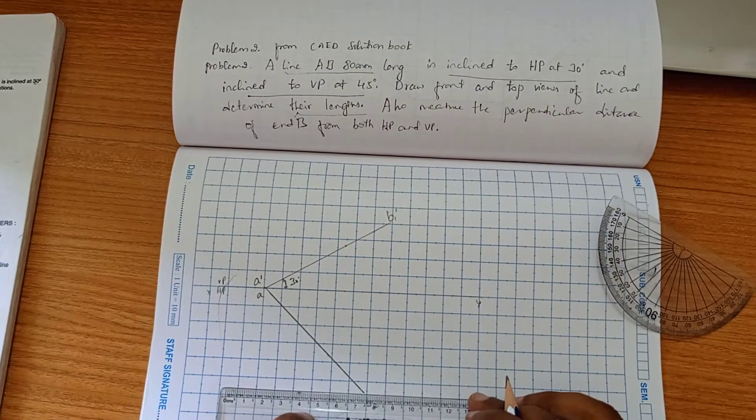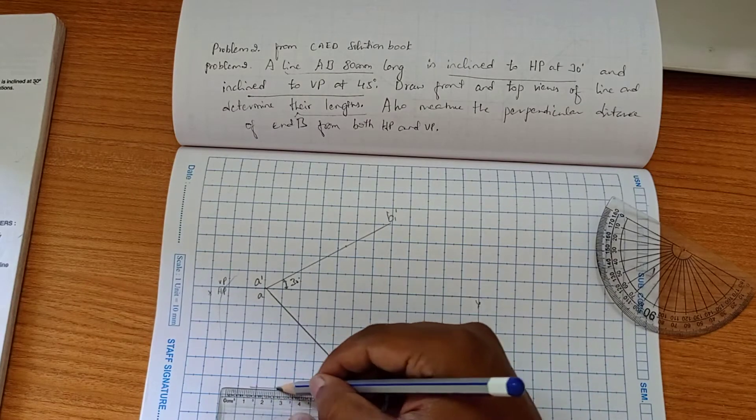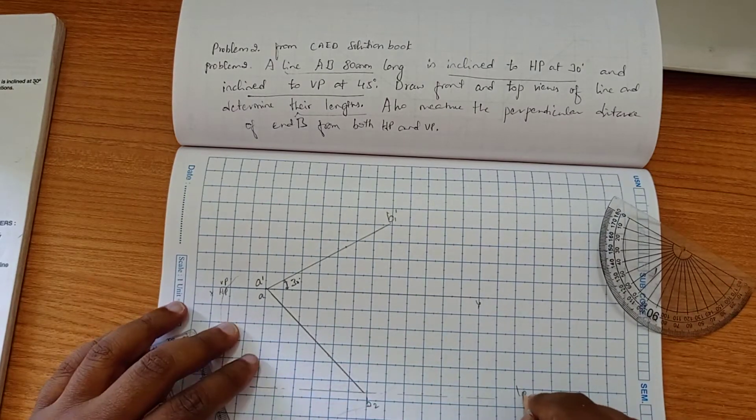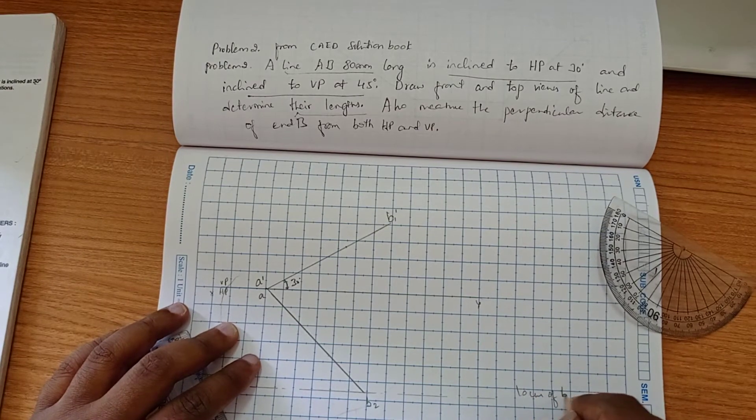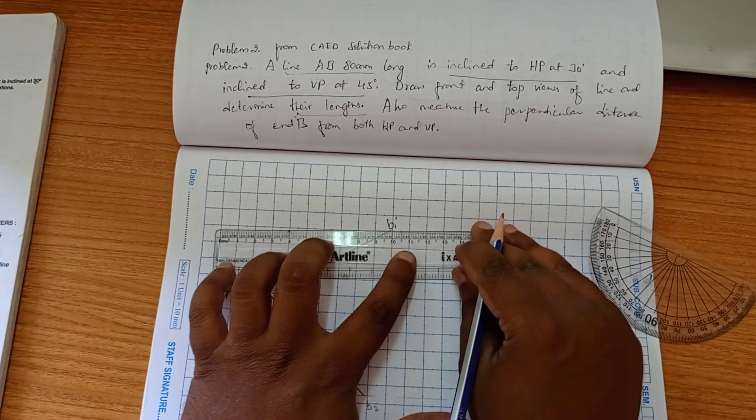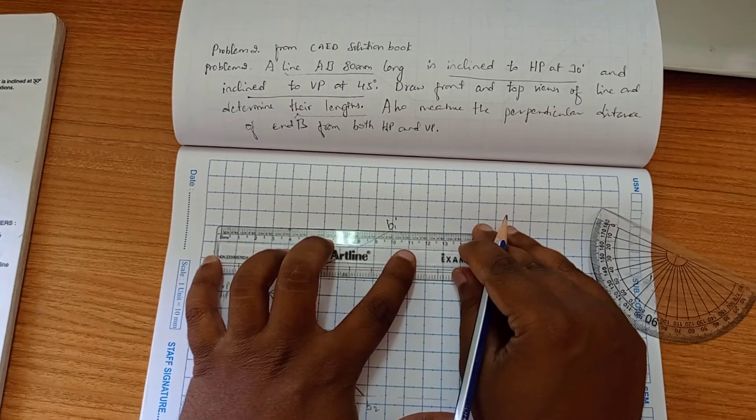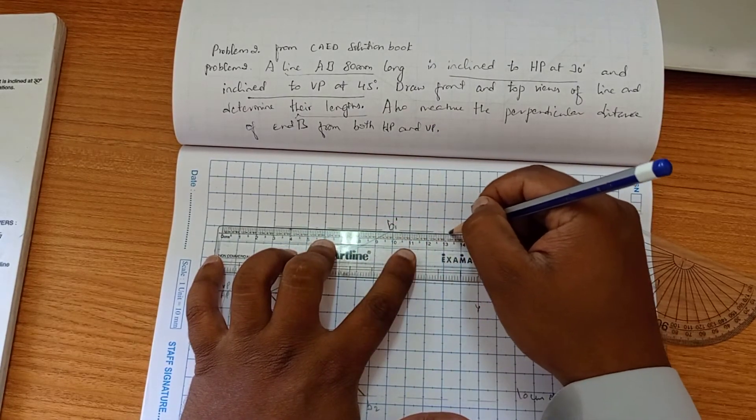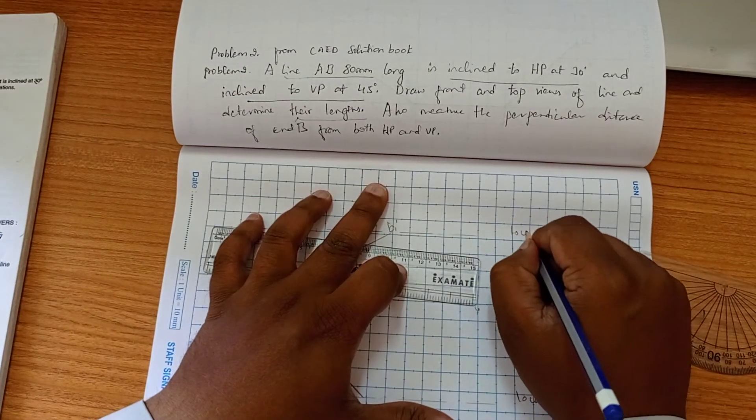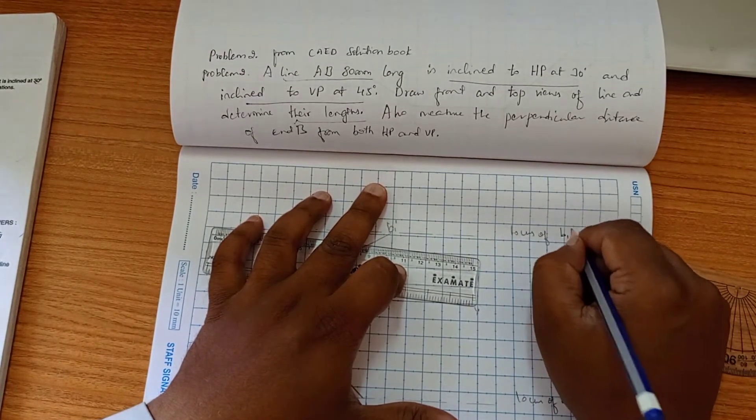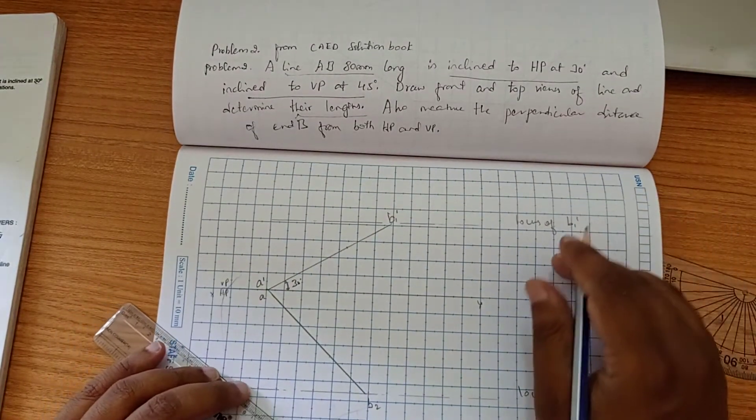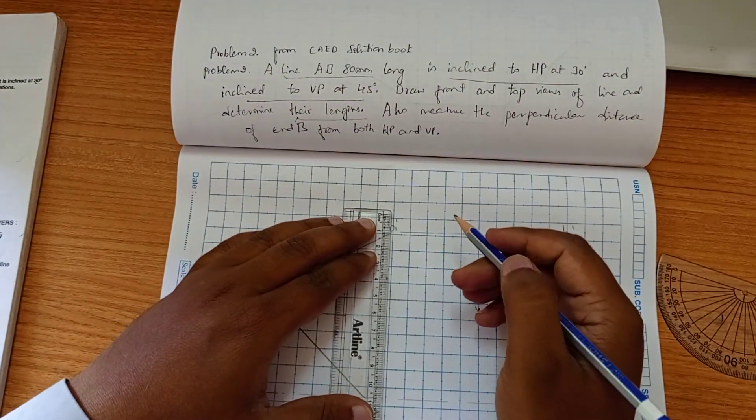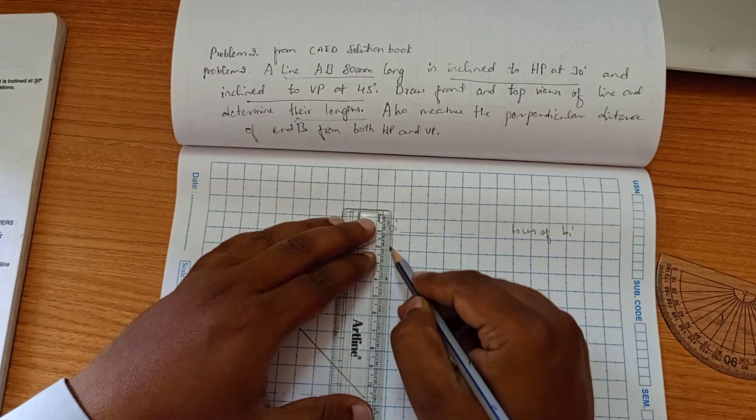Now we are going to draw a locus down here. This is locus of B2. And this is locus of B1'. Another procedure here is we have to project it downward till here.